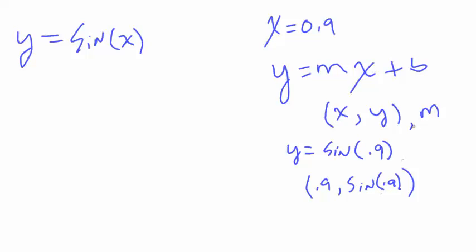Now we need to come up with m, and to come up with m means that we need to find the derivative, because the derivative is going to give us the slope of this tangent line. So we'll find the derivative, y prime is equal to, and the derivative of sin is cosine, cosine x. So there's the slope.